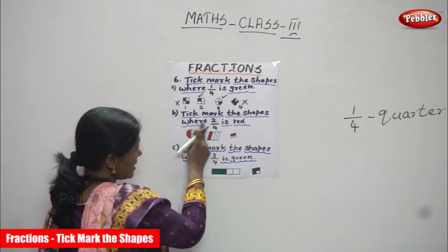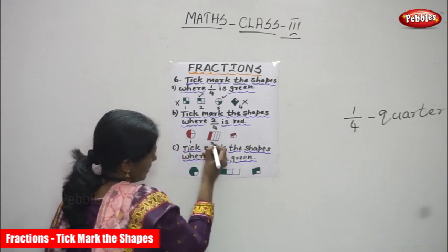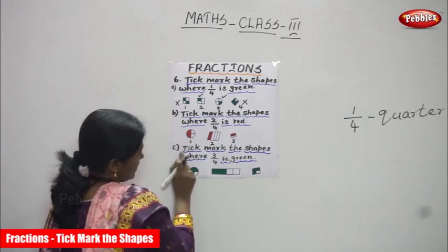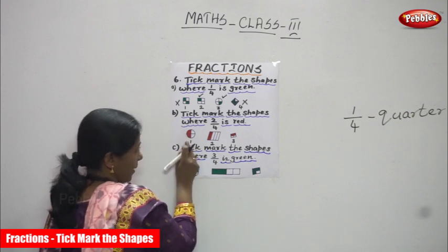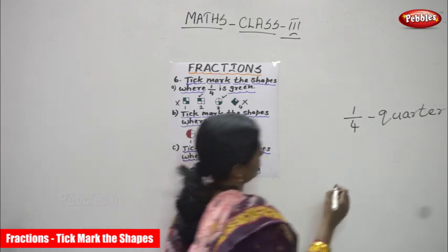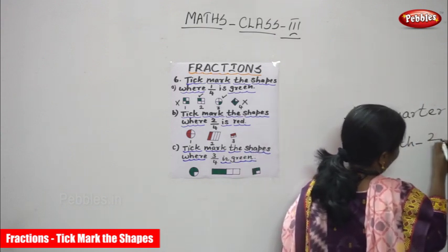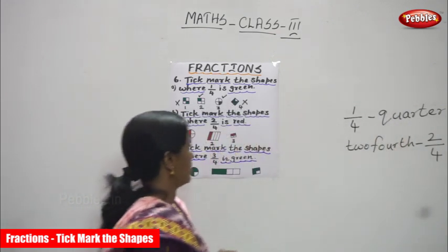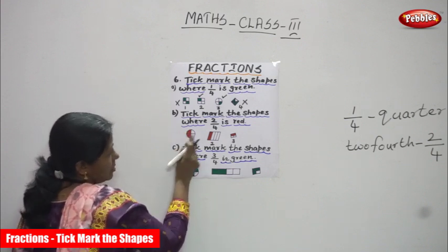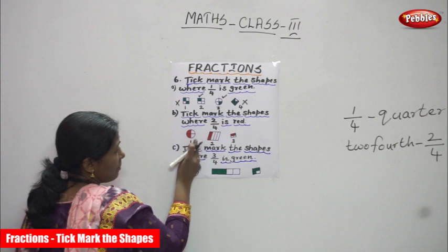Tick mark the shapes where two by four is red. Look at the first diagram — it is a circle shape. I cut it into four equal parts and shaded two parts in red color. Two parts means two by four, otherwise called two fourth. So the first diagram has two by four shaded in red.